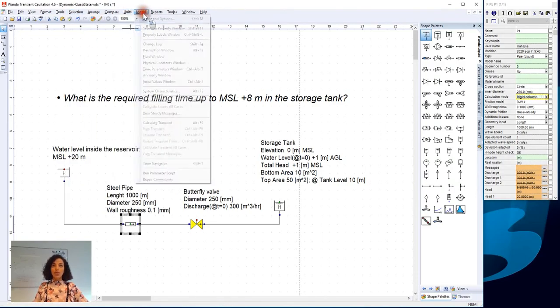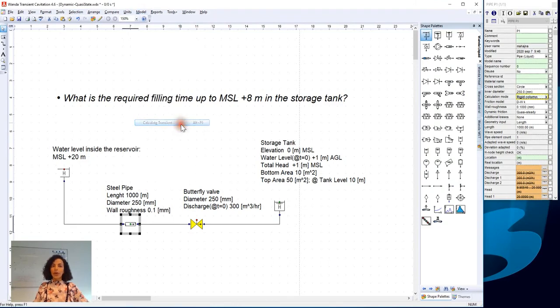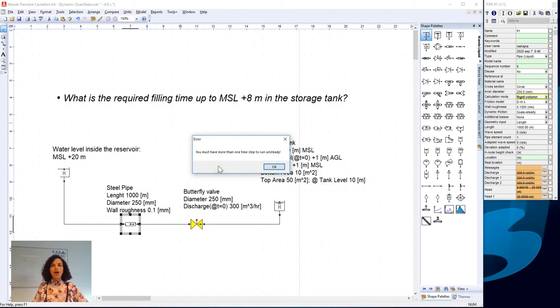So we go to Model and we ask Wanda to calculate transient. Here Wanda is telling us that we are missing time step to run unsteady simulation.